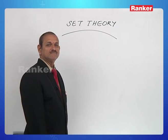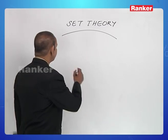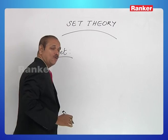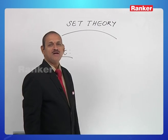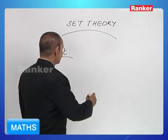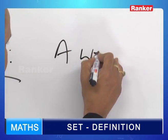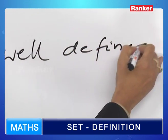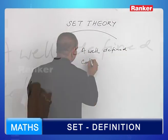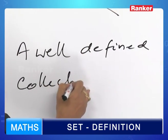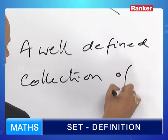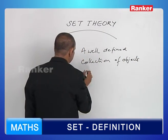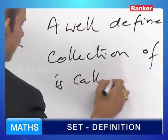First of all, what is a set? A well-defined collection of objects is called a set.